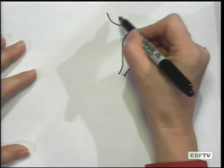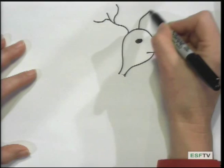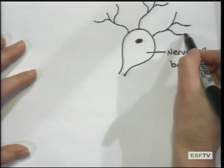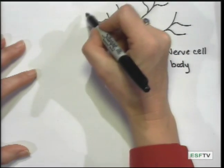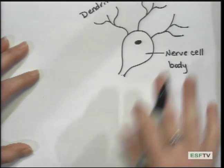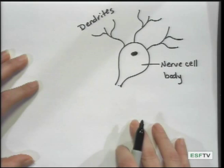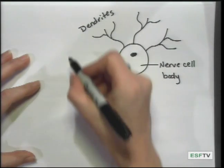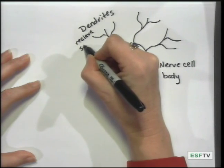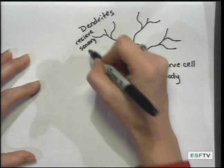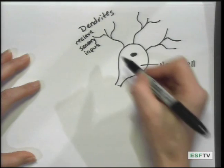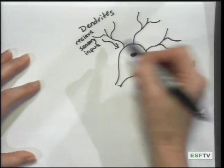There are processes coming off of the nerve cell body, and these are called dendrites, which also means tree. These dendrites are receiving sensory information and they are transmitting it towards the nerve cell body.